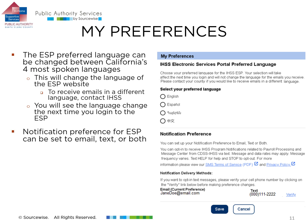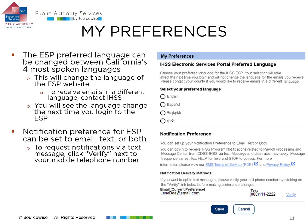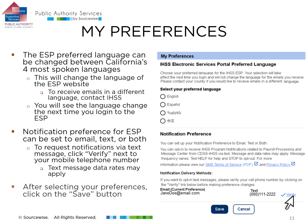You can also update your preferences on how you would like to receive ESP notifications by choosing email, text, or both. To request notifications through text messages, check that the mobile number is correct on the screen. Then click the word 'verify' on the right of that phone number. After selecting your preferences, click the Save button.